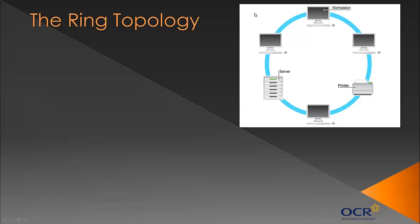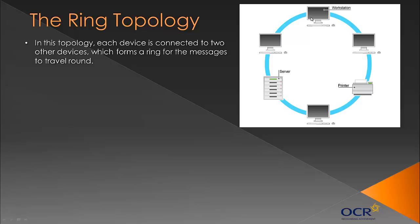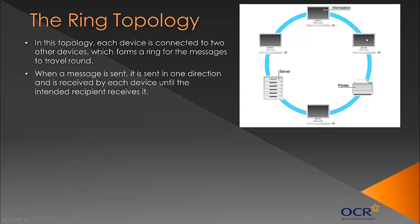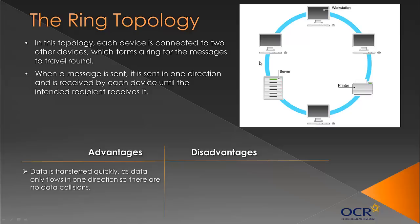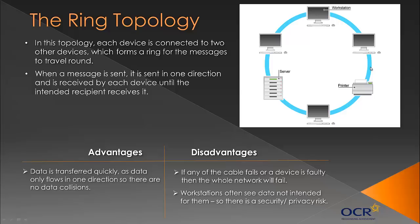The ring topology connects each device to two others, forming a ring with no central connection point. Messages are sent in one direction, passing through each device until they reach the destination. The further away the destination, the longer it takes. Advantages include fast data transfer with no data collisions. Disadvantages include: if any cable or device fails, the whole network fails; and workstations may see data they're not meant to, creating a privacy and security risk.